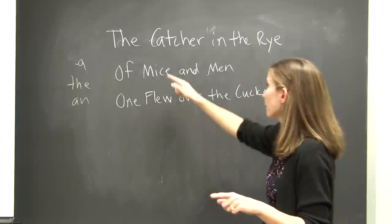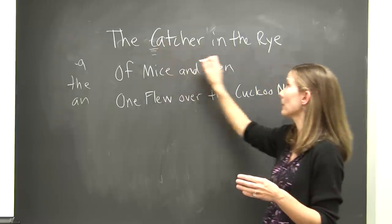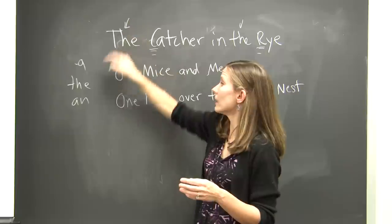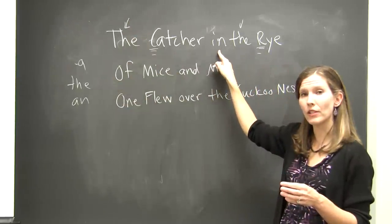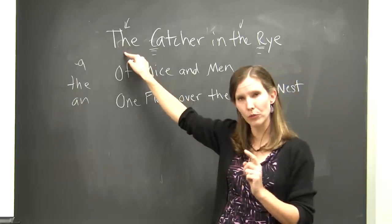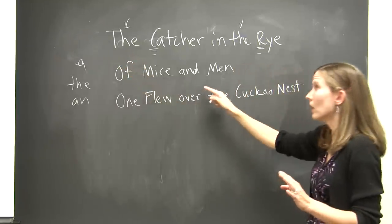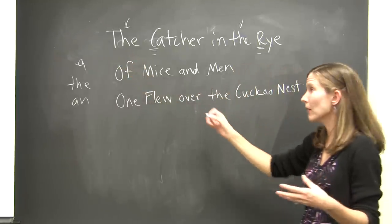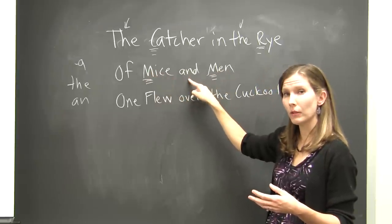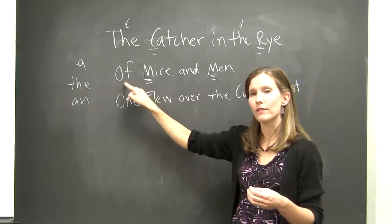For example, The Catcher in the Rye: you capitalize the important words — Catcher and Rye are capitalized. The is an article and in is a preposition, so they're lowercase, except the first The is capitalized because it's the first word of the title. You always capitalize the first word. Another example: Of Mice and Men — Mice and Men are capitalized. And is a conjunction, so it's lowercase. Of is a preposition, so it would be lowercase, except it's the first word of the title, so it's capitalized.